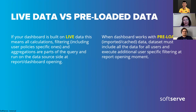The next part covers live data and preloaded data — we start here on the row-level security part. There are two main options for how we access data. With a live connection, when a user opens a dashboard, the BI platform sends a query to the database. In this case, we can incorporate user policy logic into that query and receive results already filtered for the current user opening the dashboard.